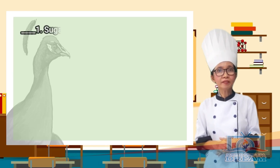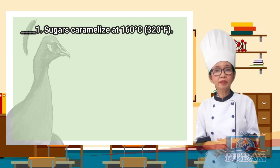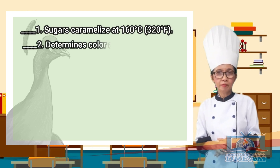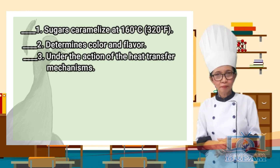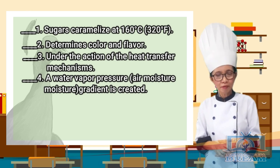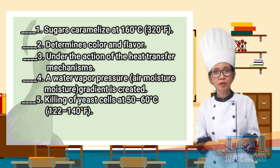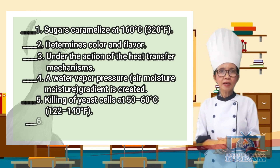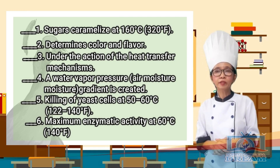Number 1: Sugar caramelized at 160 degrees centigrade or 320 degrees Fahrenheit. Number 2: Determines color and flavor. Number 3: Under the action of the heat transfer mechanisms. Number 4: A water vapor pressure gradient is created. Number 5: Killing of yeast cells at 50 to 60 degrees centigrade or 122 to 140 degrees Fahrenheit. Number 6: Maximum enzymatic activity at 60 degrees centigrade or 140 degrees Fahrenheit.